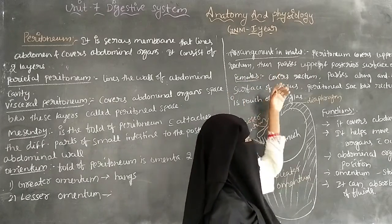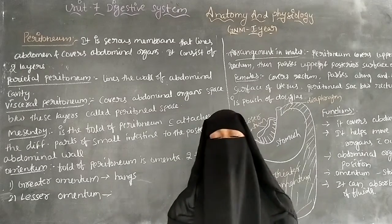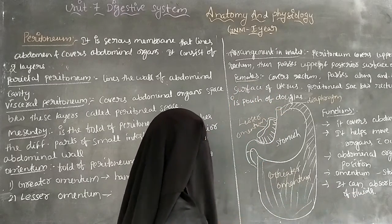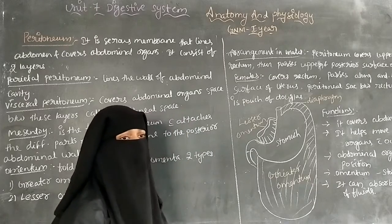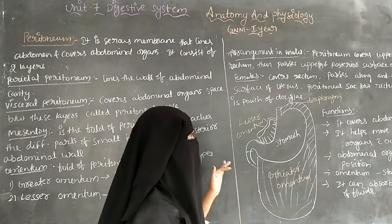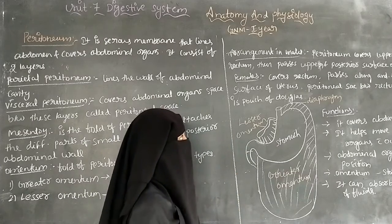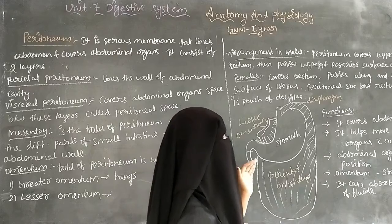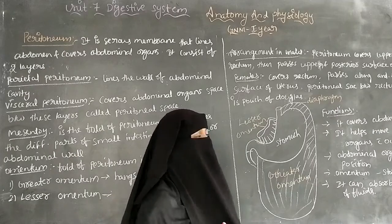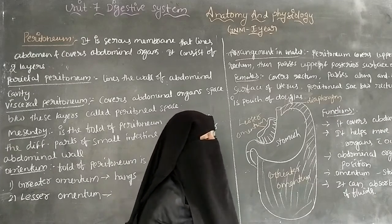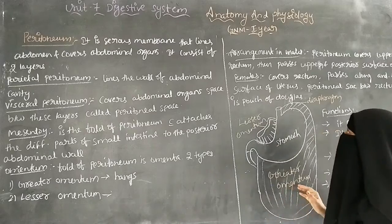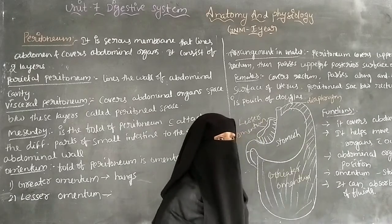The arrangement of the peritoneum is different in males and females. In males, the peritoneum covers the upper part of the rectum and then passes over the upper and posterior surface of the bladder.